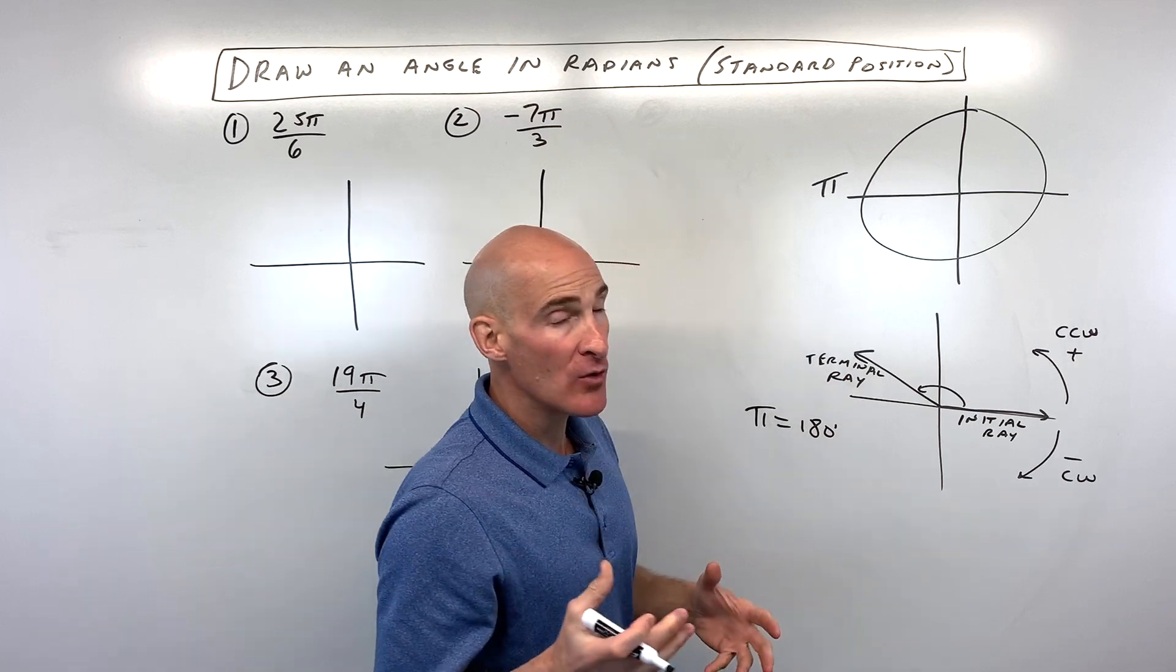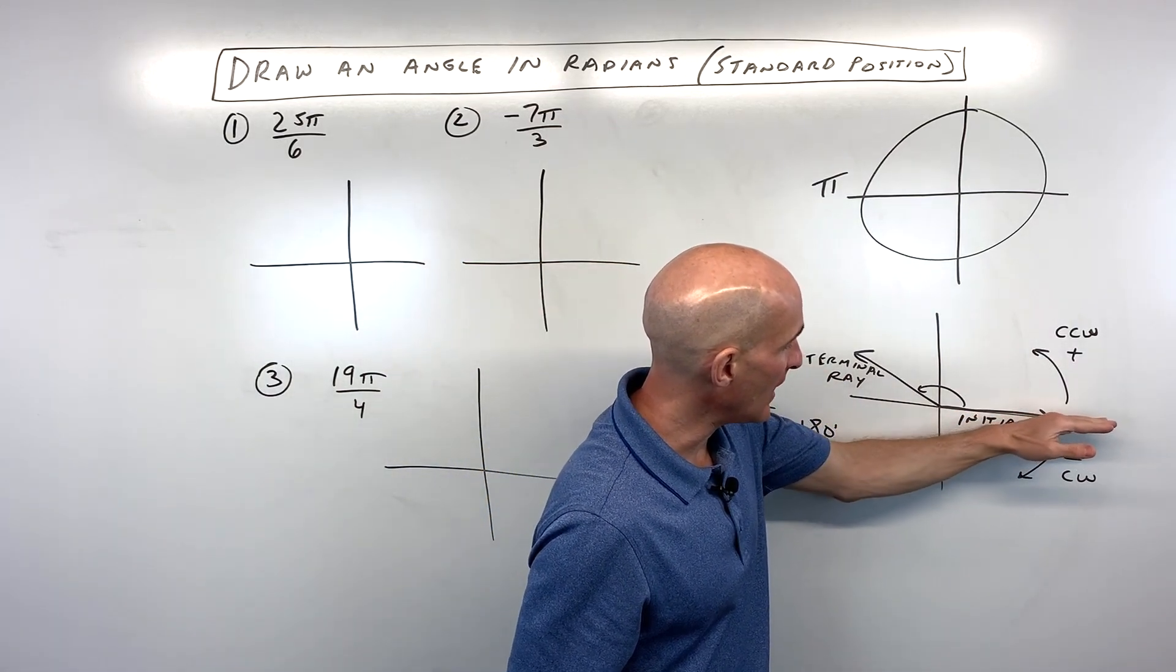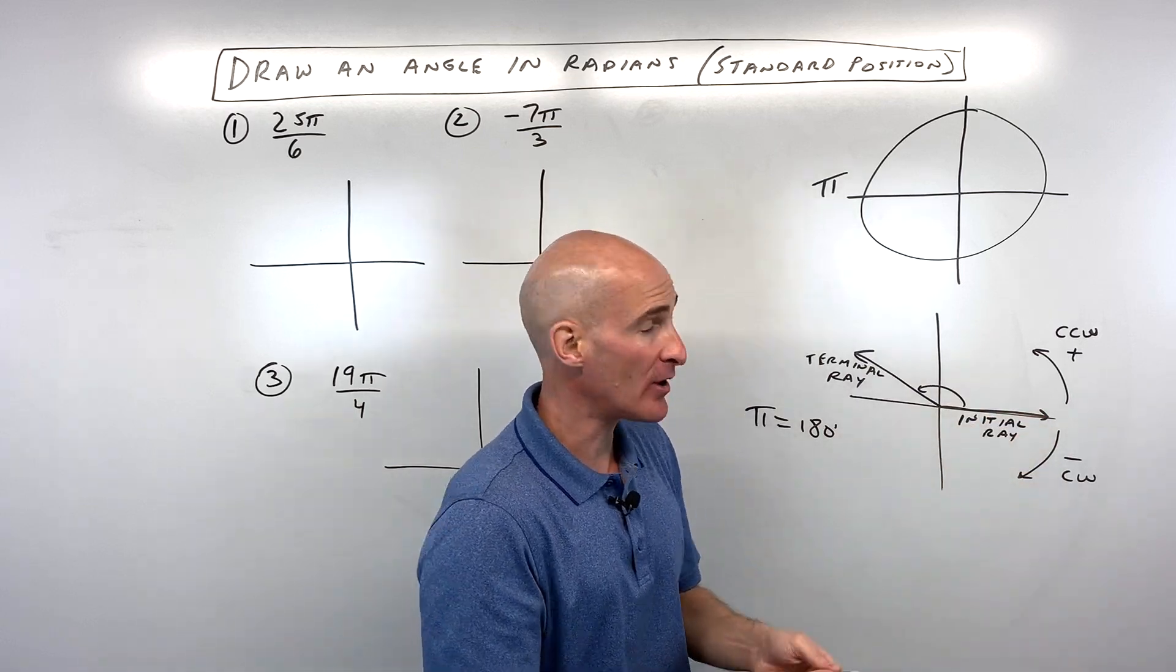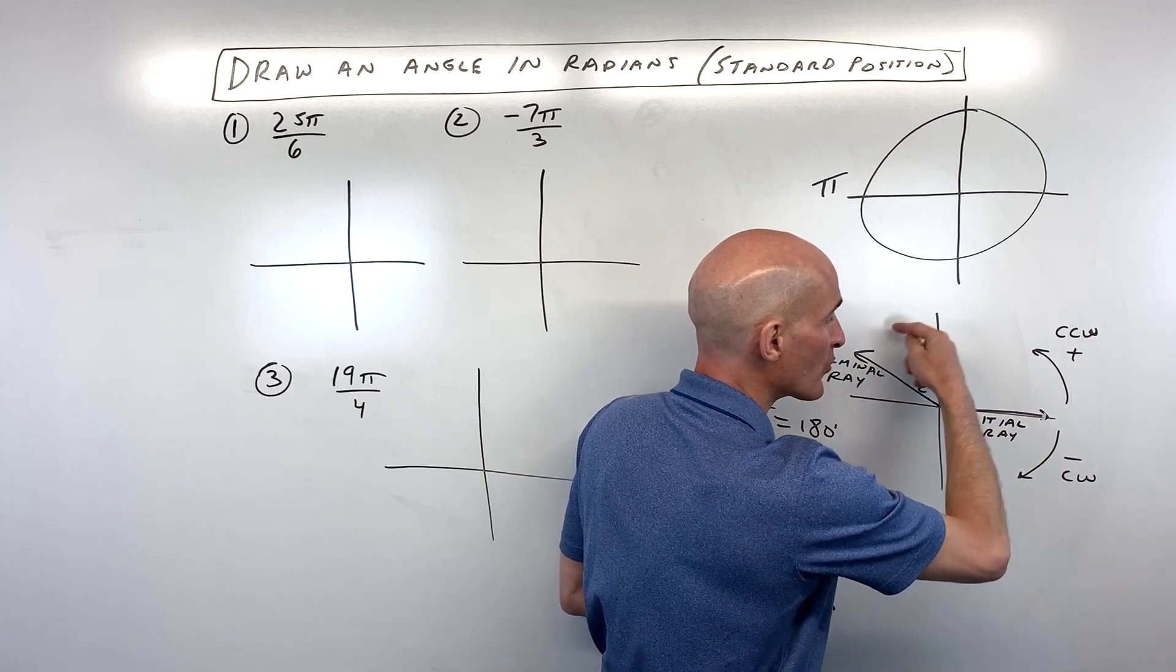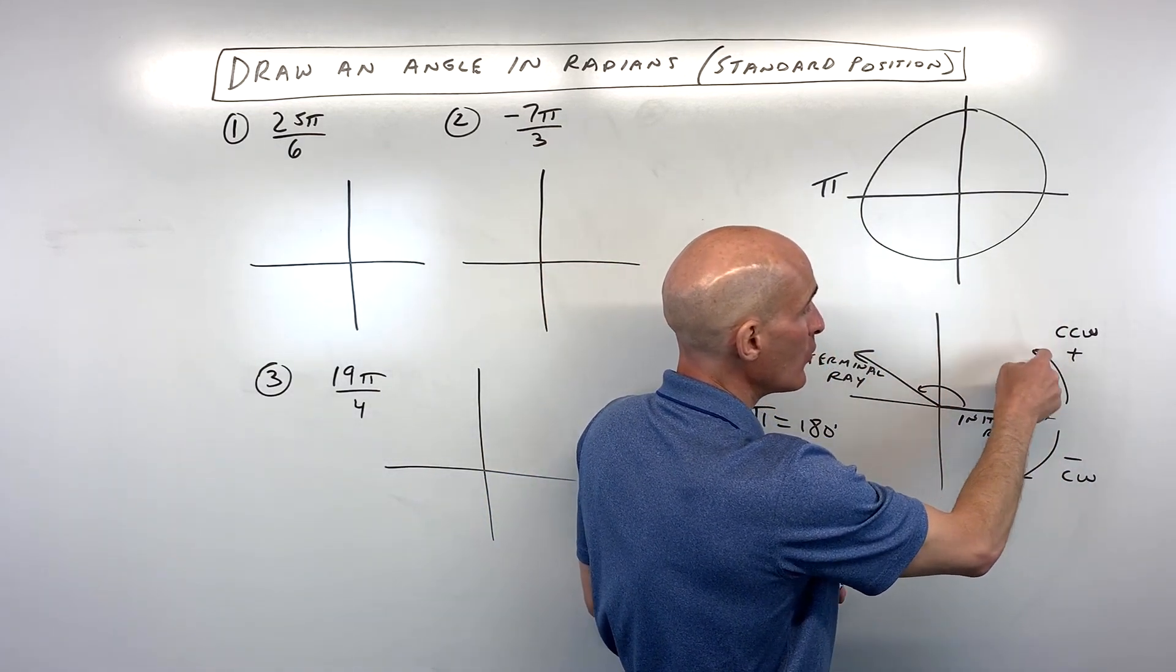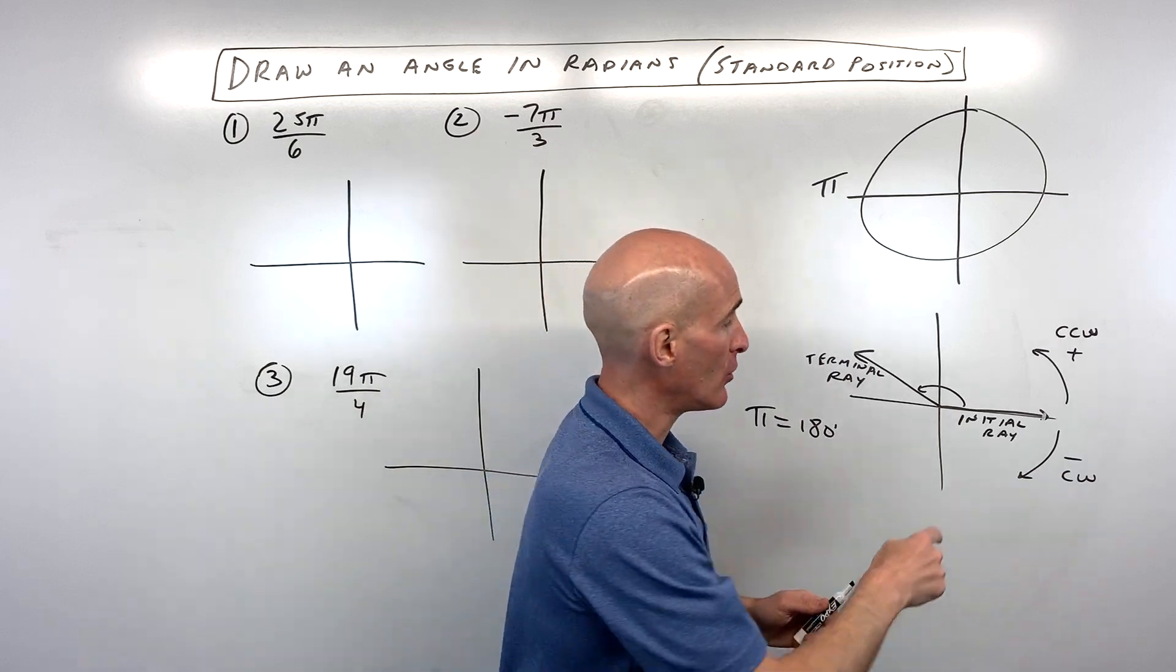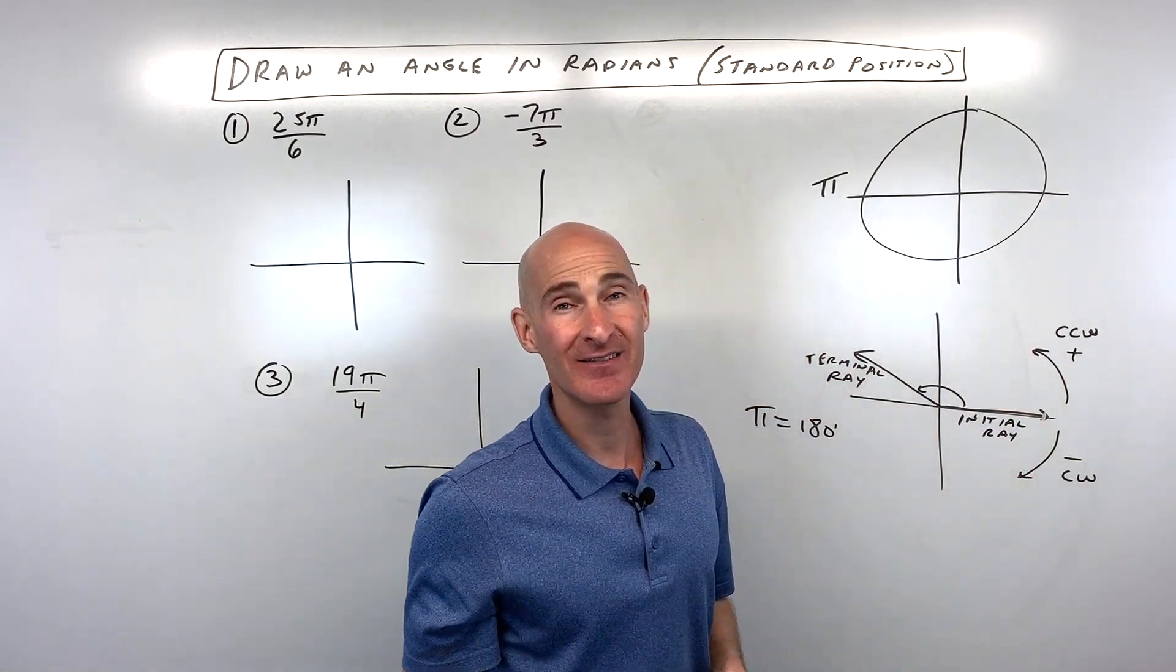Now, when we draw an angle in standard position, we have what we call the initial ray. That's where it's kind of like a spinner. Like imagine if you were spinning this. It's going to either rotate counterclockwise or it's going to rotate clockwise. If it rotates counterclockwise, we refer to that as a positive angle. If it rotates clockwise, that's actually a negative angle.